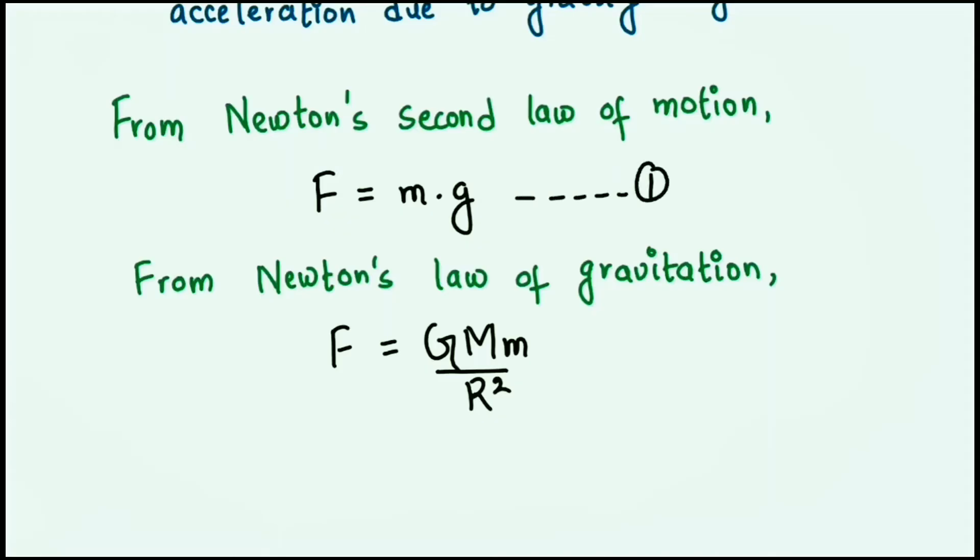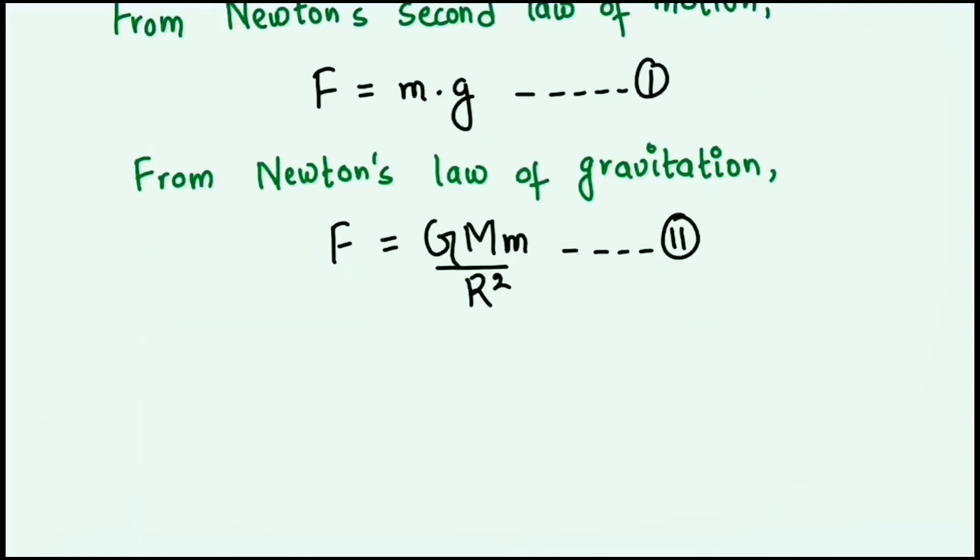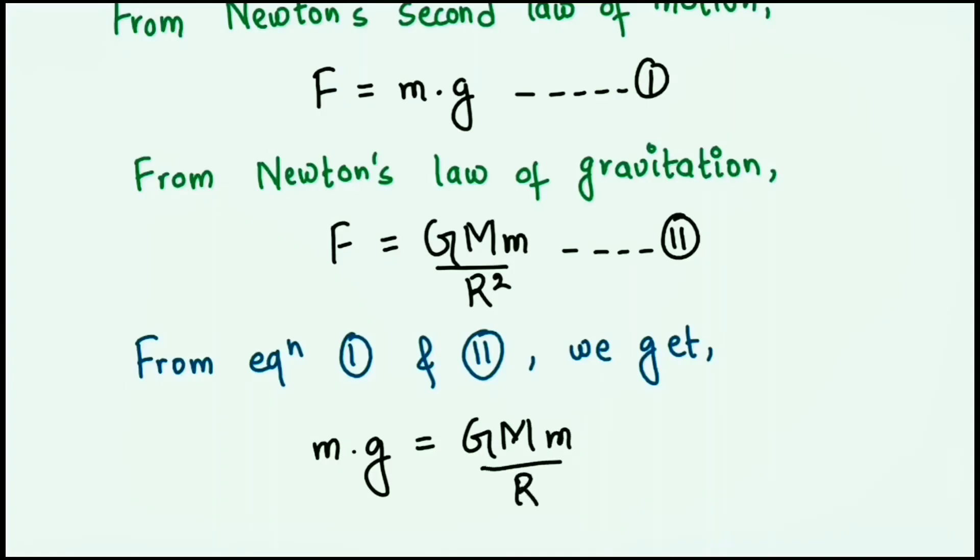Now we are going to assume these equations as equation 1 and equation 2. And since both of these equations give us the formula of force, we can equate these two equations and get m·g = GMm/R².